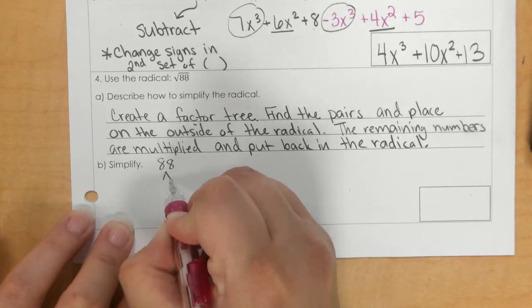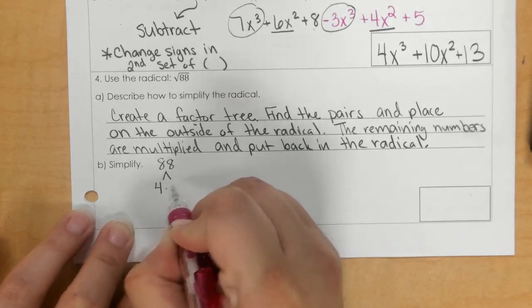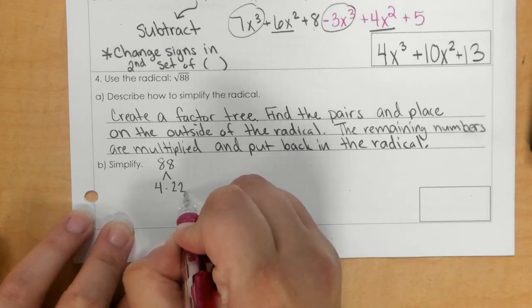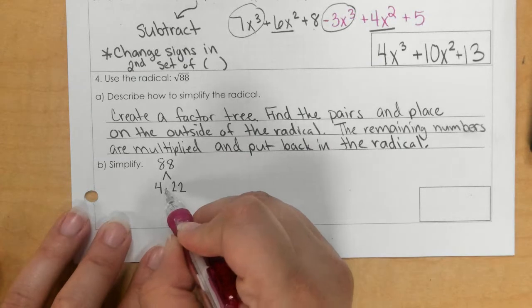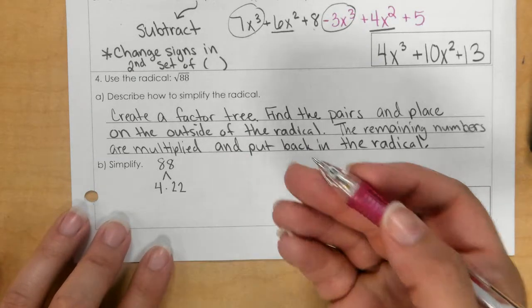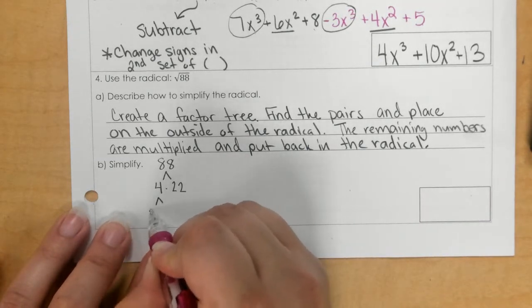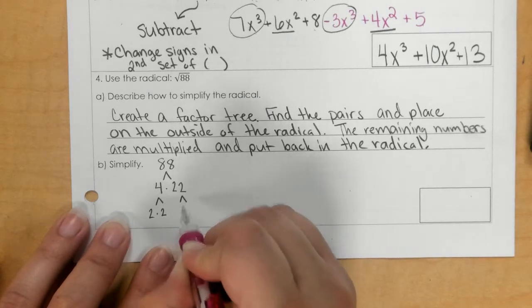So we can break that down to 4 and 22. You could use 8 and 11, any other combination that makes 88. So for 4, we can break it down to 2 and 2. And for 22, we can break it down to 2 and 11.